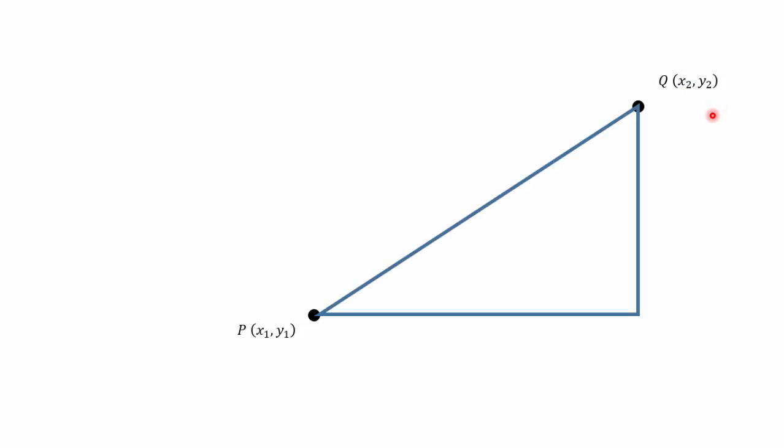If we draw a right-angled triangle between those two points, there is a third point, R, with coordinates x2 and y1 that forms the third point of the triangle.